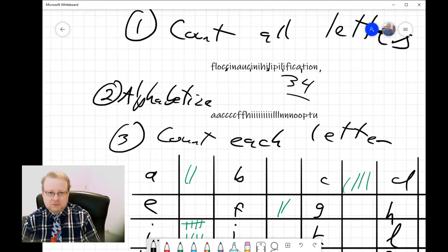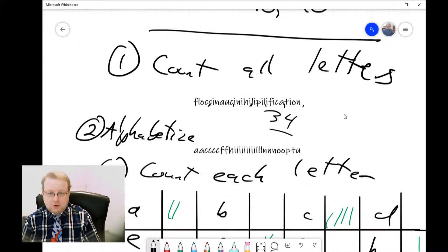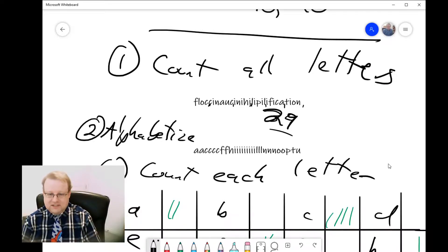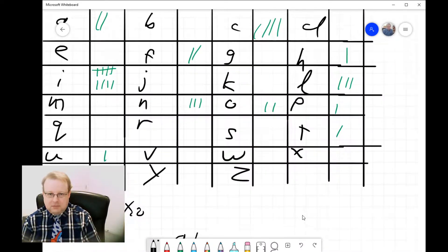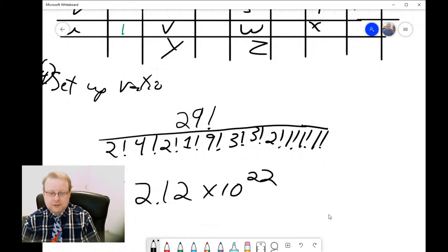For doing any problems like these with words: first, you count all of the letters—there's 5, 10, 15, 20, 25, 29 letters here. Then you alphabetize these letters, count how many instances you have of each individual letter, set up your ratio, and then finally do your calculation.